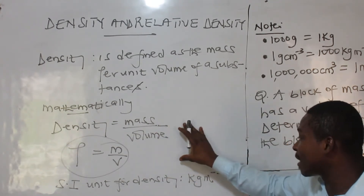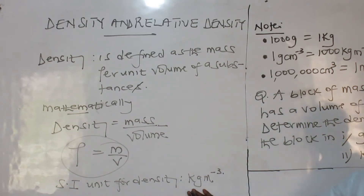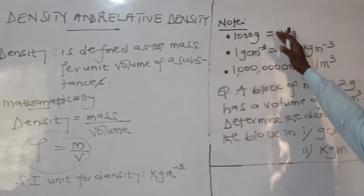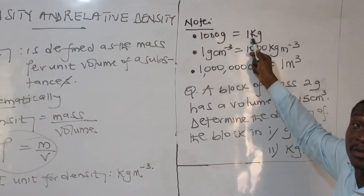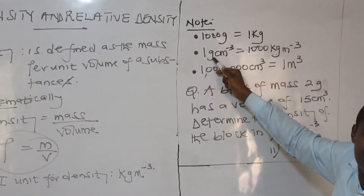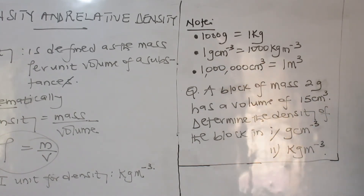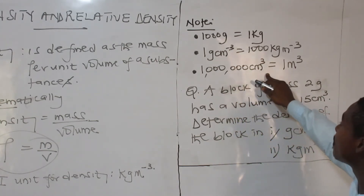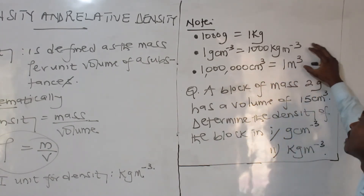Math is science; science is math. The SI unit for density is kilogram per cubic meter. Now we have some conversions we will be looking at. One thousand grams equals one kilogram. One gram per cm³ equals one thousand kilograms per meter cube. So these are the parameters we will be using.